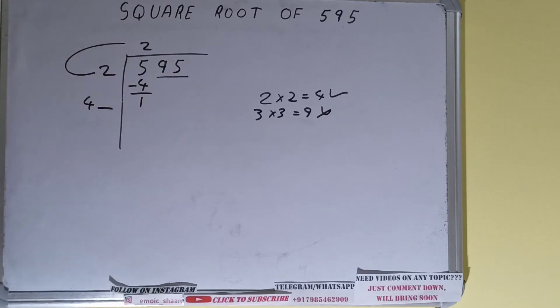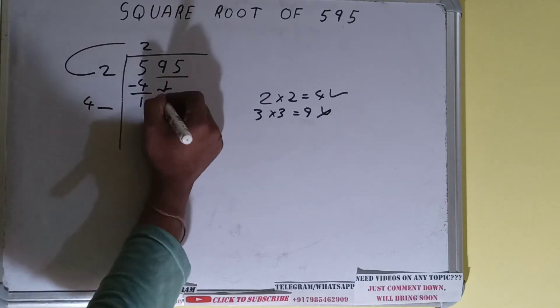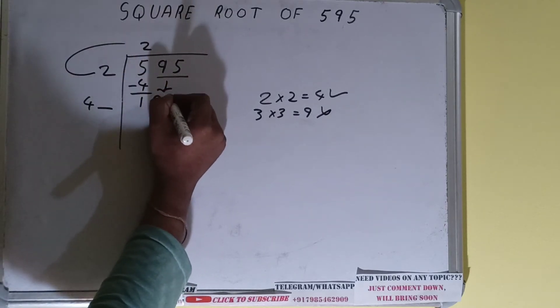This number we need to make bigger, so bring the next pair down and it will become 195.